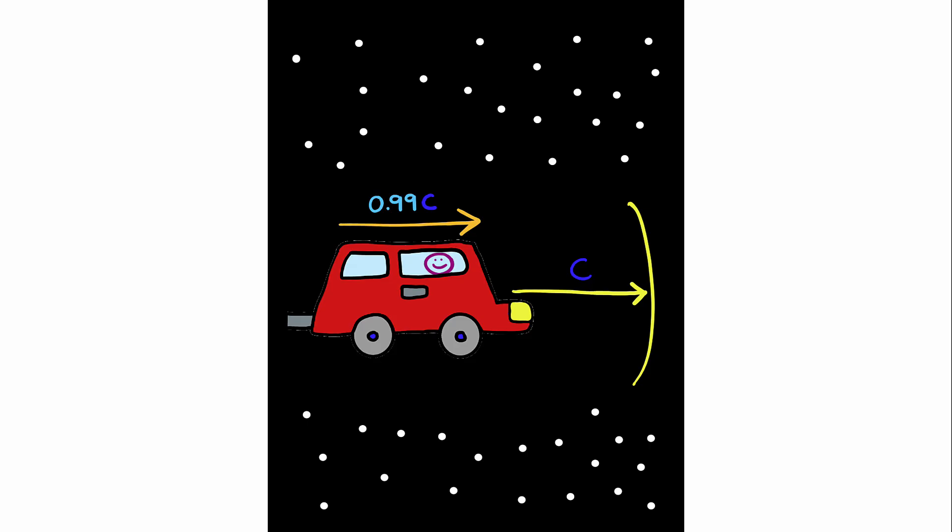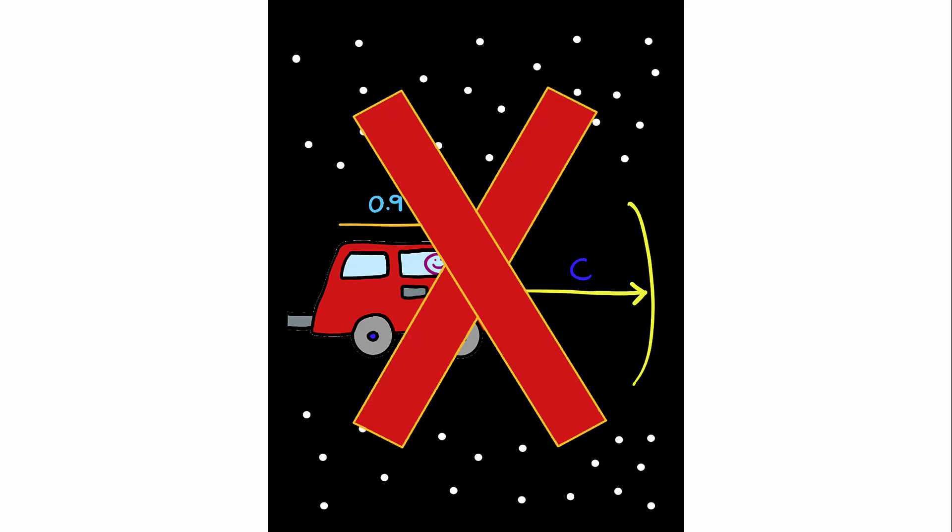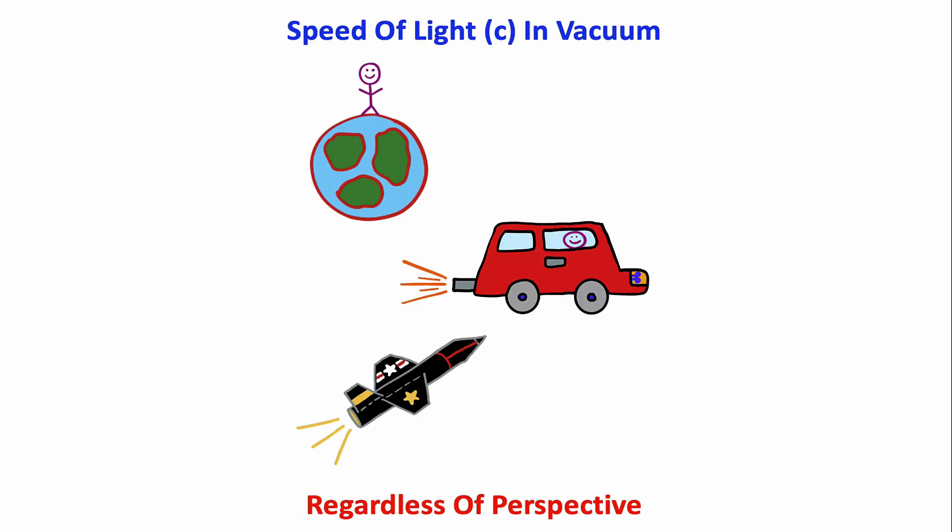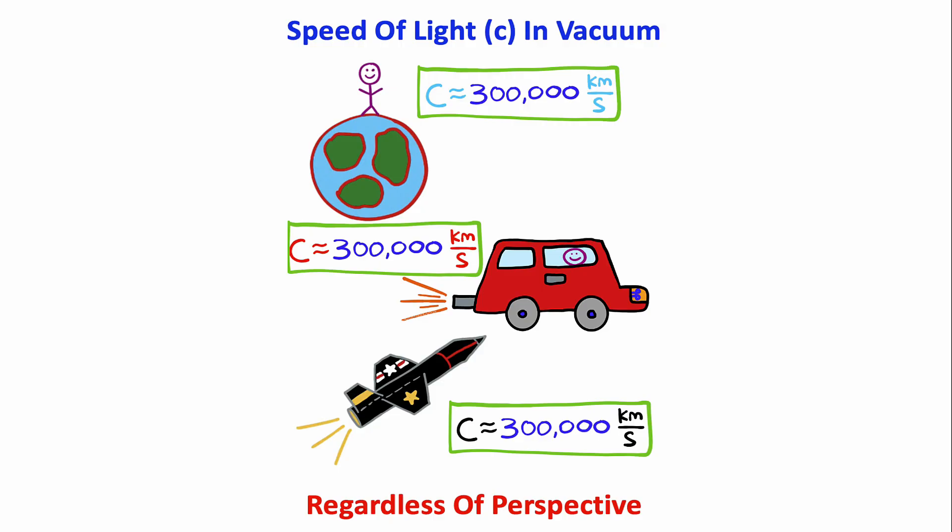But unfortunately, this assumption would be incorrect because in physics, we learn about something called special relativity which teaches us the speed of light is the same constant in every reference frame. So someone who's watching the car from Earth would witness the same speed of light from the headlights as someone who's sitting inside the car.